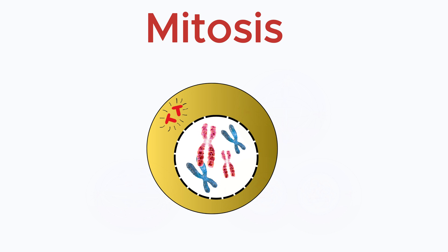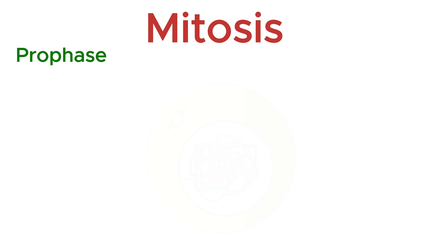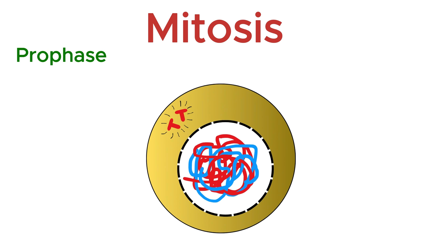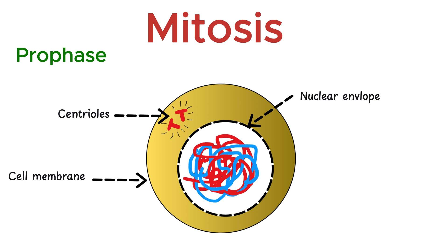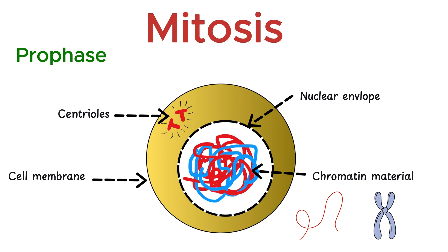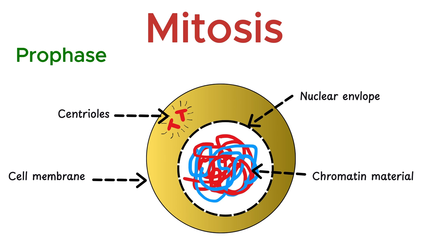Mitosis starts with prophase. Prophase is the stage where the cell prepares for division. Here is the parent cell. This is the cell membrane. These are the centrioles. This is the nuclear envelope. And this is the chromatin material. Chromatin is a long, thread-like structure — the uncondensed form of chromosomes. During this stage, several important changes take place inside the cell to ensure equal division of chromosomes.